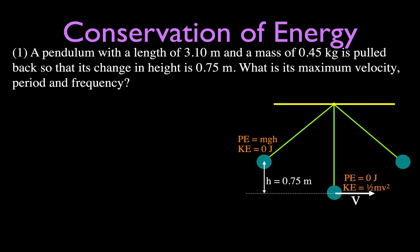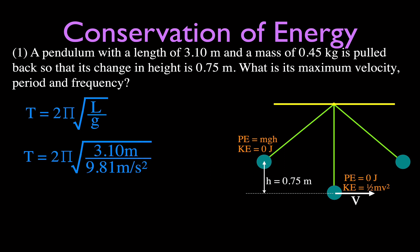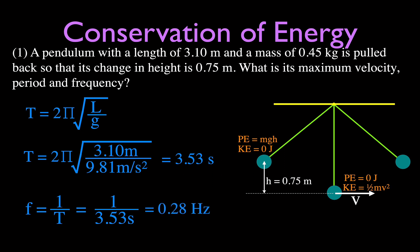For problem one we also need the period and frequency. The equation for the period is T equals 2 times pi times the square root of L over G — where G is the acceleration due to gravity, not grams. Plugging in the length of 3.10 meters divided by 9.81 m/s², the period is 3.53 seconds. Since period and frequency are inversely proportional, frequency equals 1 over T, which is 1 over 3.53, giving a frequency of 0.28 hertz — about a quarter of a cycle per second.